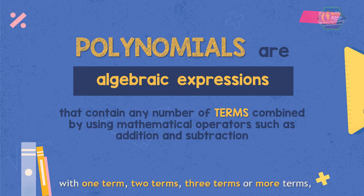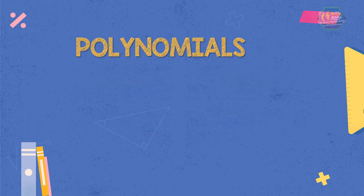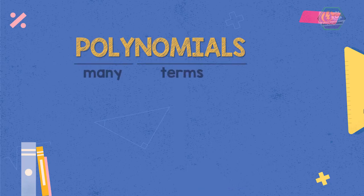If you have an algebraic expression with one term, two terms, three terms, or more terms, they are called polynomials. Polynomials also come from the word poly, which means many, and nomial, which means terms. These are some examples of polynomials.